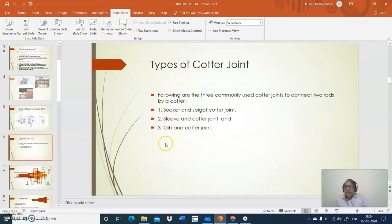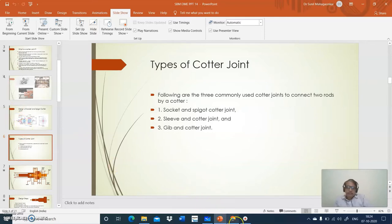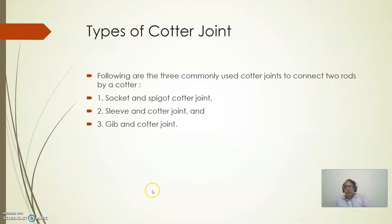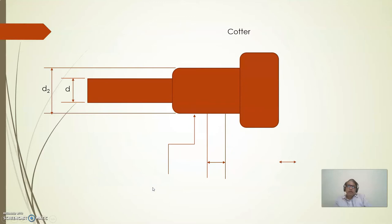The types of cotter joints are: socket and spigot cotter joint, sleeve and cotter joint, and gib-end cotter joint. Now let us go for the cotter. This is the spigot and socket and spigot joint.